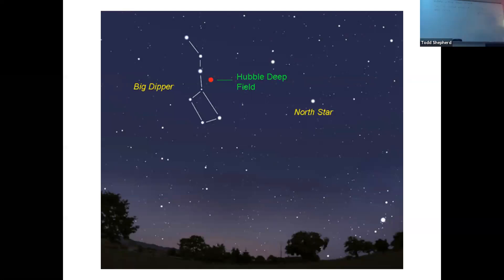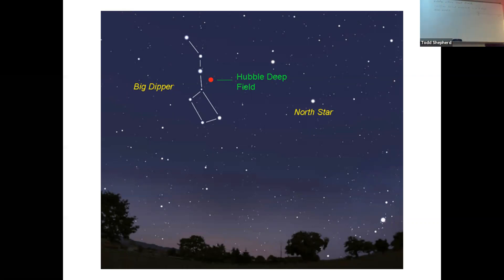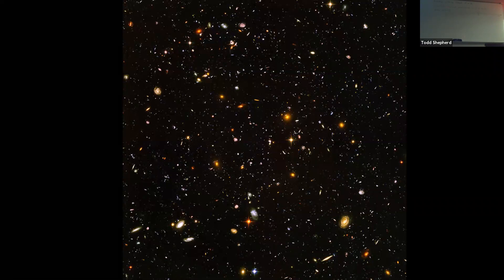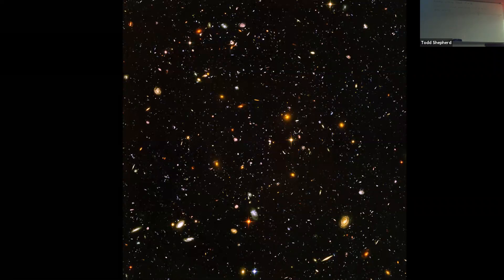After they took the images and stacked them all, they ended up with an image that looks something like this. This is the Hubble ultra deep field image. I want you to stare at that for just a moment, let your eyes adjust. What I want you to understand is that every point of light you see on that photograph is not a star in the Milky Way galaxy. In fact, there are no background stars from the Milky Way galaxy. Every point of light you see there is a galaxy outside of the Milky Way galaxy.